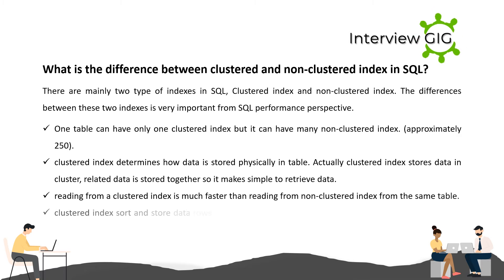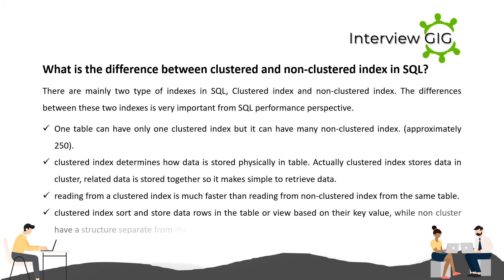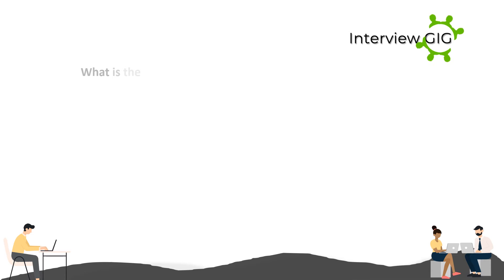Related data is stored together, making it simple to retrieve data. Reading from a clustered index is much faster than reading from a non-clustered index from the same table. Clustered index sorts and stores data rows in the table or view based on their key values, while non-clustered indexes have a structure separate from the data rows.